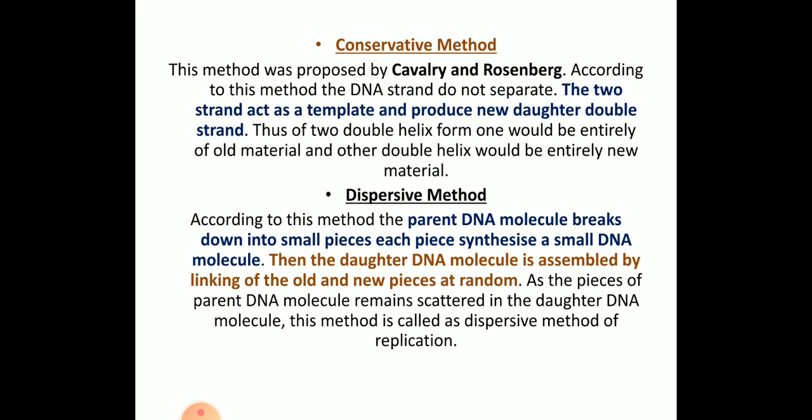In the conservative method, proposed by Cavalieri and Rosenberg, the two strands act as a template and produce new daughter double strands — all four strands will be new strands acting as daughters. In the dispersive method, the daughter DNA molecules are assembled by linking old and new pieces randomly, because of small segmented DNA. The daughter DNA molecules are assembled by linking old and new different types of DNA segments.